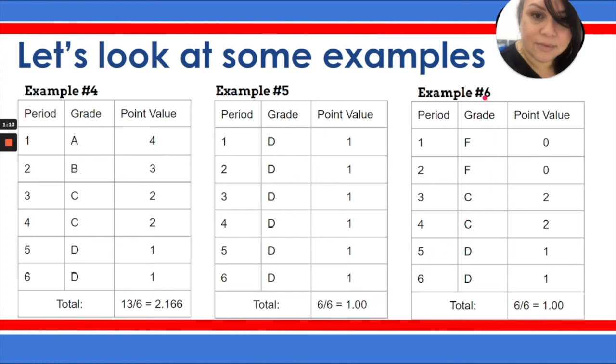Example number six is very similar. Even though the student mostly passed all their classes, still the grades are so low that the GPA ends up being a 1.0. Again, another student who is a good candidate for alternative schools. Alternative schools are an opportunity for students to hit the reset button on their grades and credits and an opportunity for them to get back on track for graduation.